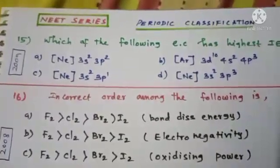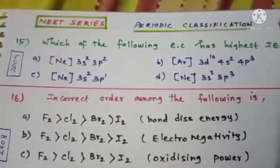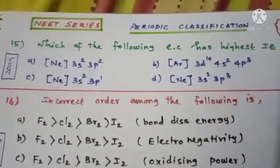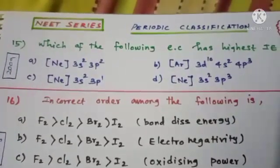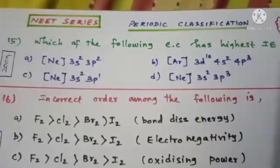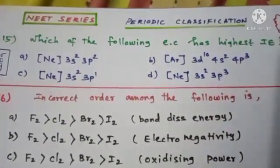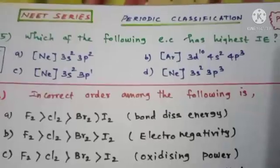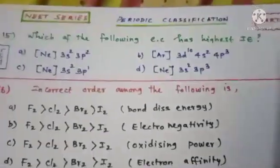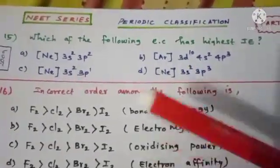Welcome to Chemepedia, chemistry classes for 11th and 12th standard. In this video we are going to discuss previous year NEET questions based on unit Periodic Classification — this is Part 2. Question number 15: which of the following electronic configurations has the highest ionization enthalpy?